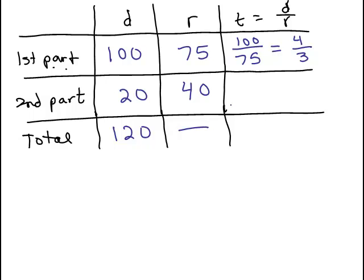For the second part of the trip you could do the distance over the rate as well, so it's 20 over 40 which reduces to 1 half by dividing the top and bottom by 20 and it does make sense to say what's the total time.